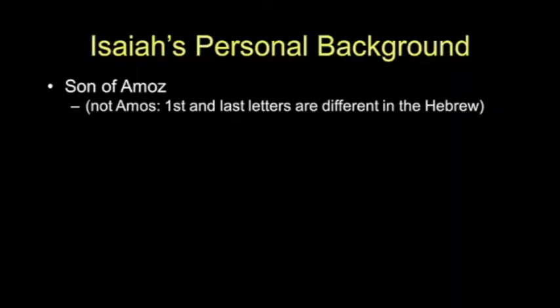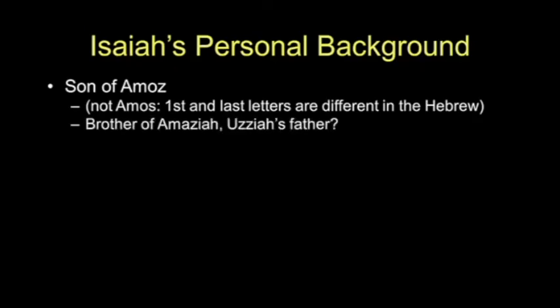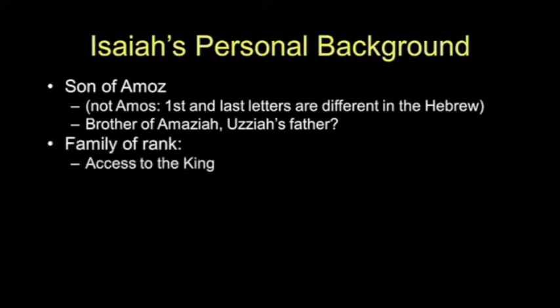Isaiah is a very unusual guy. He was the son of Amos — not Amos the prophet, a different Amos. Both the first and last letters of the name are different in the Hebrew. We believe he may be the brother of Amosiah, who is Uzziah, the father of the king. If that's correct, then Isaiah is actually of royal blood — of royal rank.